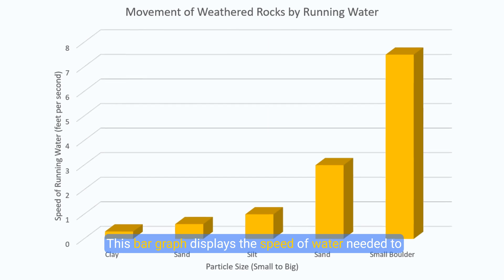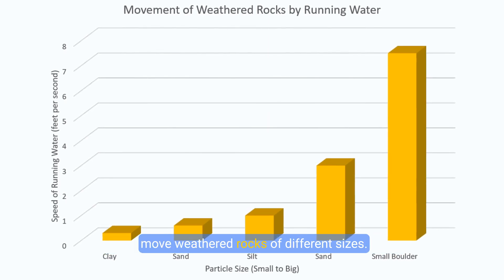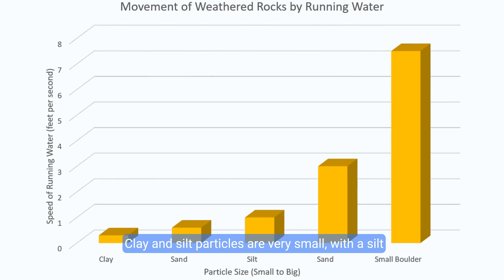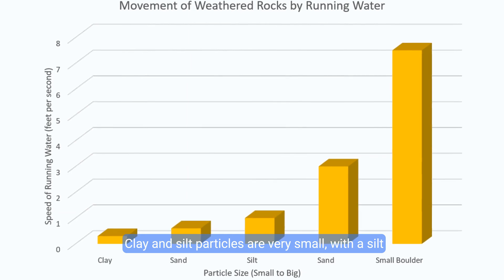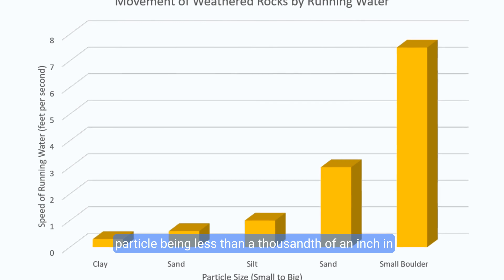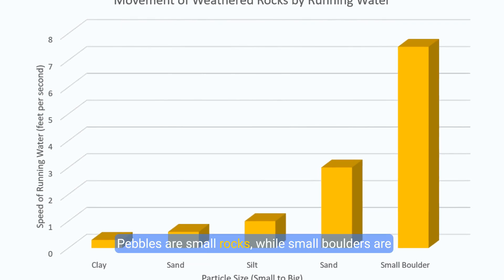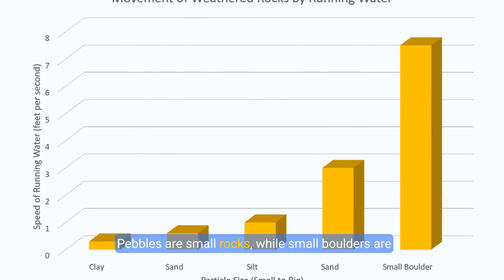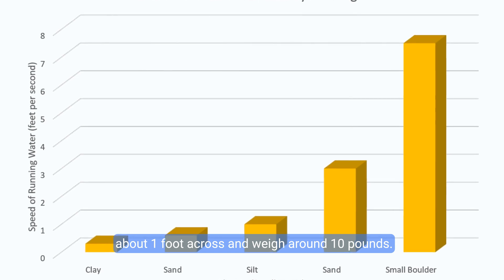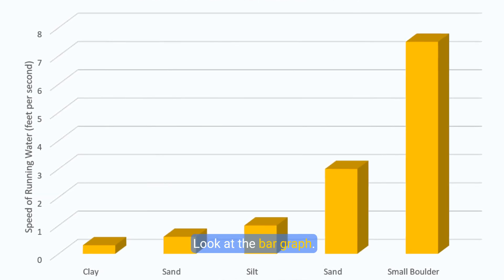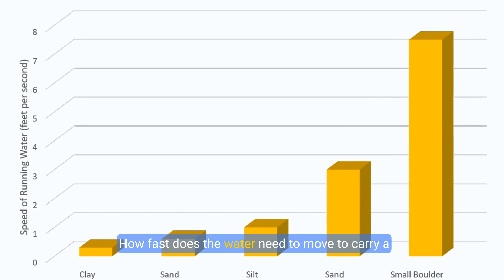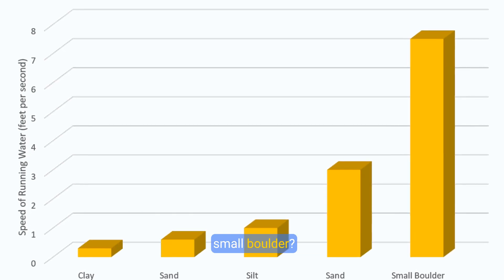This bar graph displays the speed of water needed to move weathered rocks of different sizes. Clay and silt particles are very small, with a silt particle being less than a thousandth of an inch in diameter. Pebbles are small rocks, while small boulders are about one foot across and weigh around ten pounds. Look at the bar graph — how fast does the water need to move to carry a small boulder?